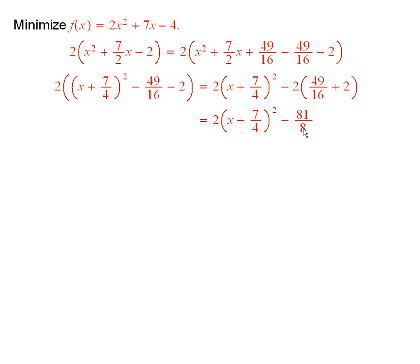It's just 81 over 8. And so you can see that the minimum value of this function is minus 81 over 8, and it occurs when x is equal to minus 7 fourths. Because if you pick any other value of x, this will be strictly bigger than 0.